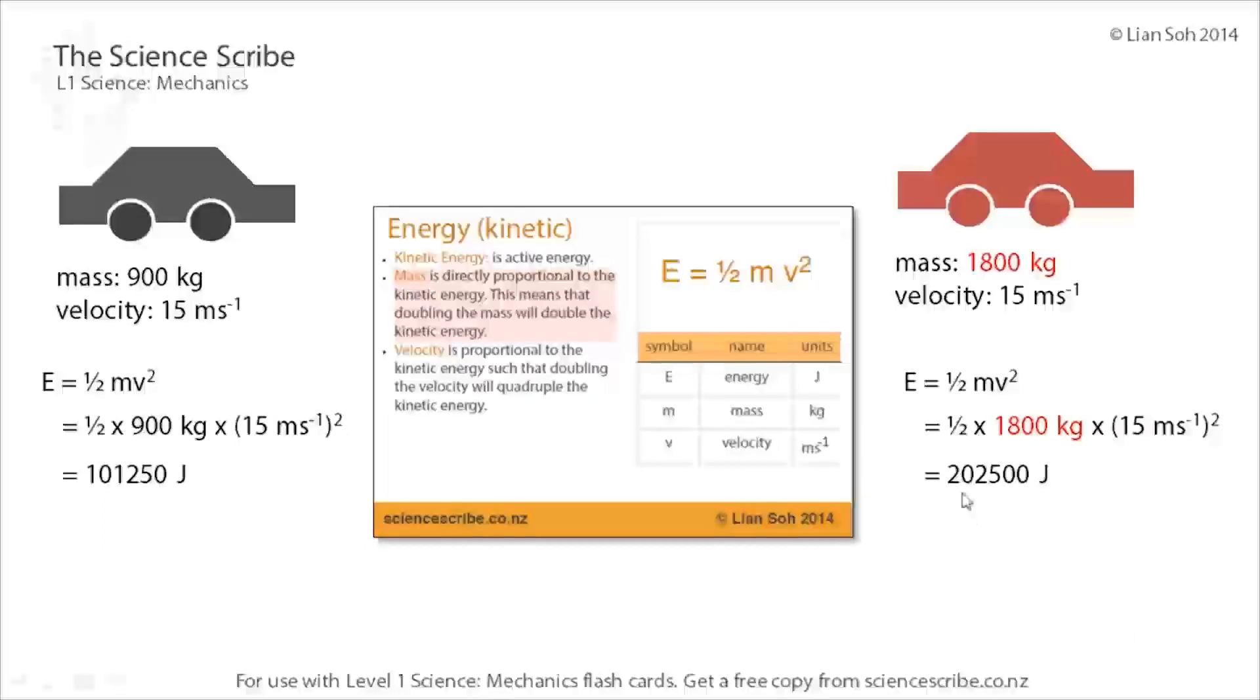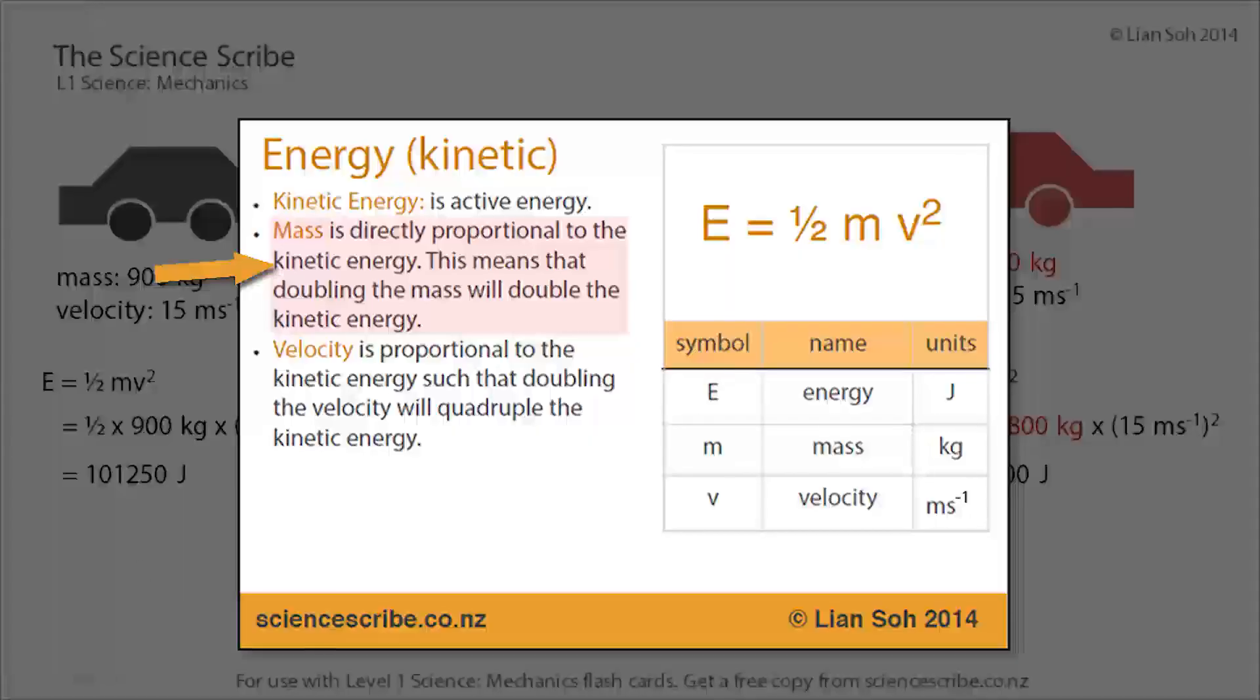I end up with 202,500 joules. That's twice as big as before. So when I double the mass, I actually double the kinetic energy of something.